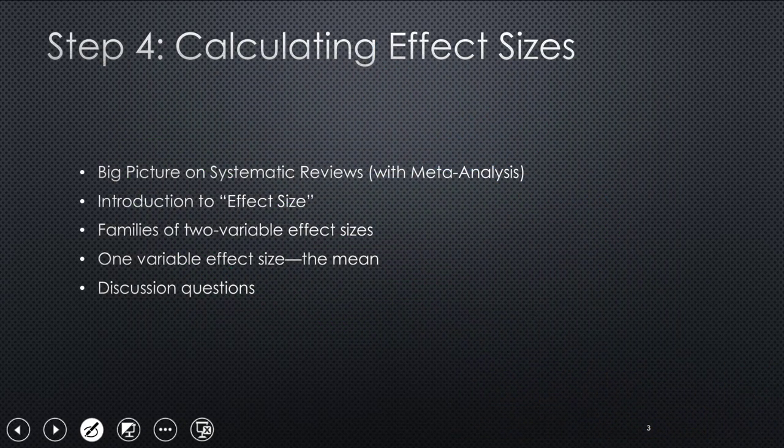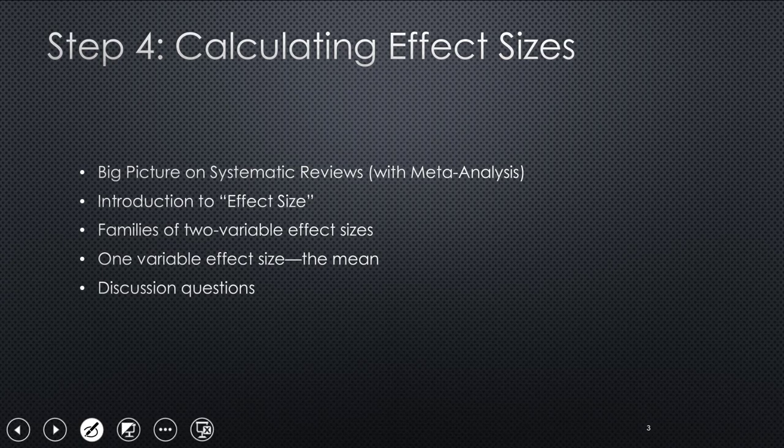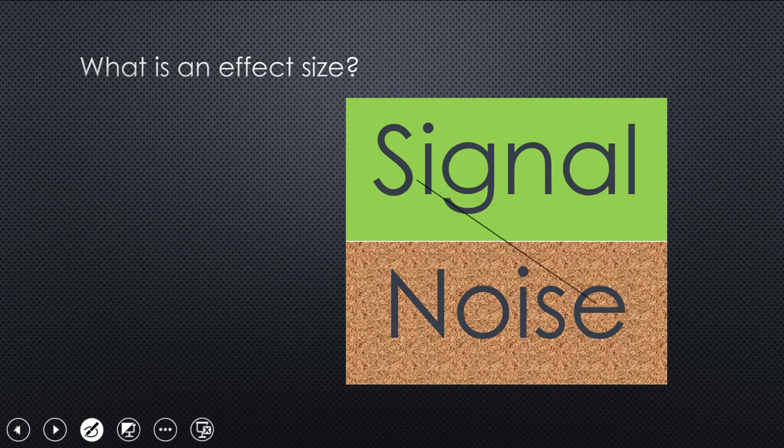So what I'll talk about here is, first, I've just given you a big picture on systematic reviews with meta-analysis. I'm introducing effect size. I'll briefly discuss families of two variable effect sizes, which are the conventional form of doing meta-analysis. And then I'm going to give you a radical one that's underused. It's actually been used for a long time, maybe without calling it meta-analysis.